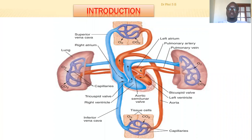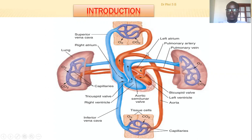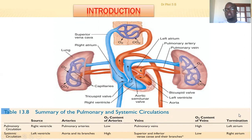The cardiovascular system has two major circulations: pulmonary circulation and systemic circulation. Pulmonary circulation involves blood transported to the lungs for oxygenation and then back to the heart; from the heart, blood is pumped into the systemic circulation to the tissues. A summary table compares the two: in pulmonary circulation the source is the right ventricle, the major arteries are the pulmonary arteries, and the veins are the pulmonary veins. In systemic circulation the source is the left ventricle, with the aorta and its branches as the major arteries.